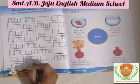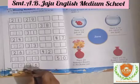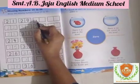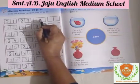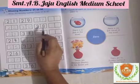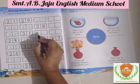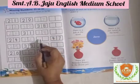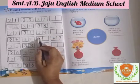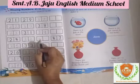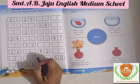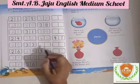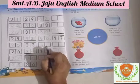Write 36. After 36, write 37. Then 38. Write down 3, then write down 9 — that is 39. After 39, write down 4 then write down 0 — that is 40. After 40, which number will come? Write 41.